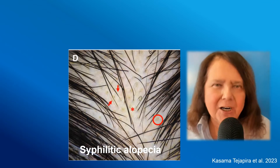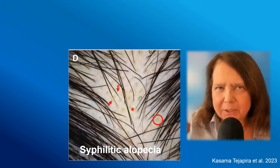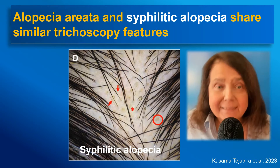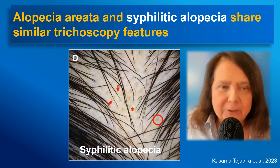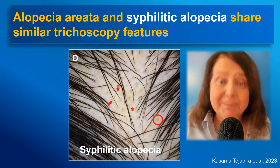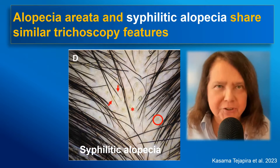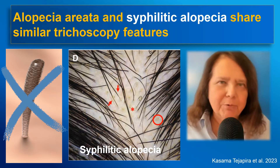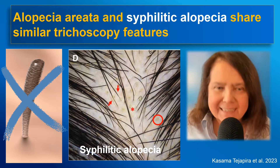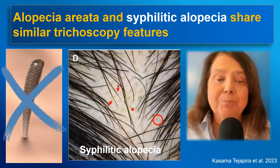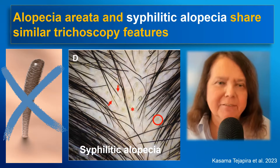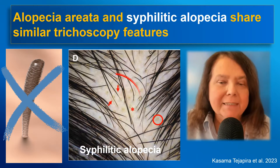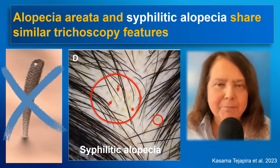There is a recent article about trichoscopy of syphilitic alopecia. The authors found that alopecia areata and syphilitic alopecia share very similar trichoscopy features. There is, however, one difference: we will never see exclamation mark hairs in patients with syphilitic alopecia, even though some tapered hairs may be present.